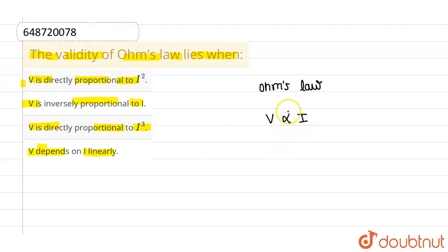Now when we remove this proportionality, we have to introduce a proportionality constant which is given by R, and R is the resistance. I is the current and V is the potential difference. V is the potential difference, R is the resistance of conductor.